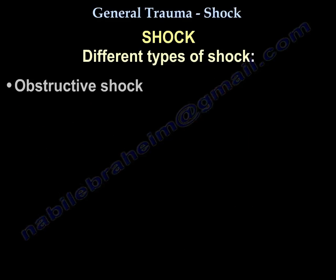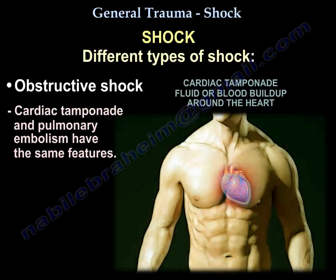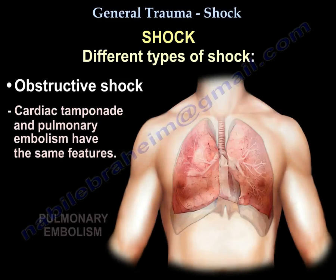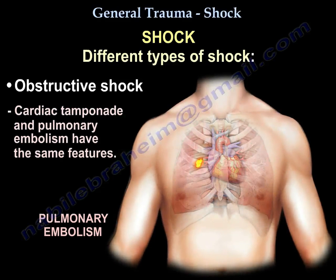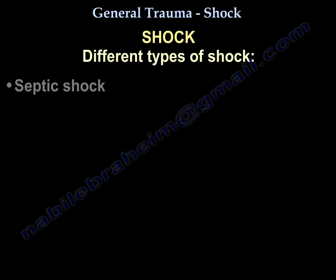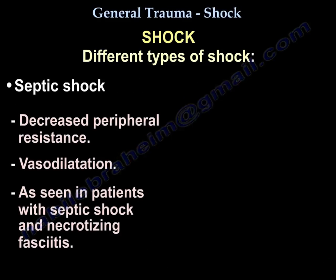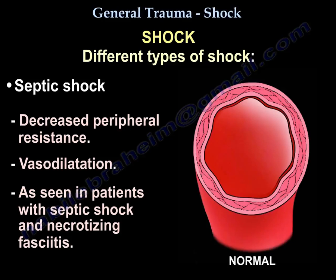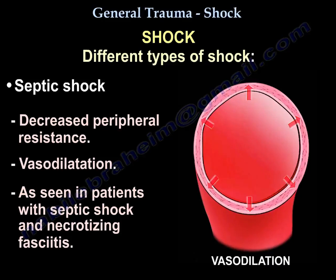Similar to cardiogenic shock is obstructive shock — like cardiac tamponade and pulmonary embolism — which have the same features. Another type is septic shock, where you will have decreased peripheral resistance and vasodilation.